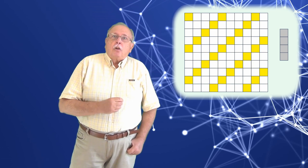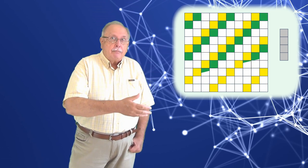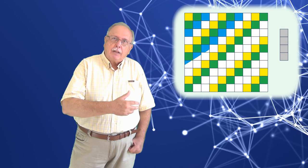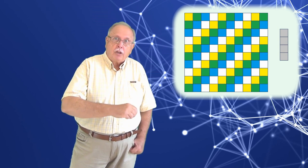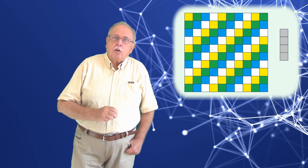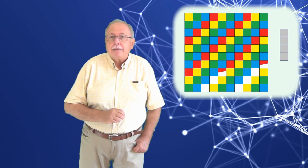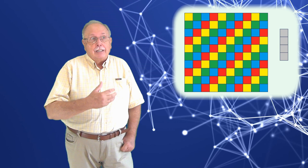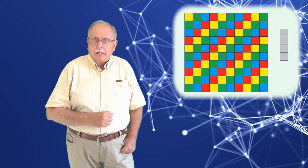Apoi să colorăm cu verde pătratele aflate la dreapta și sub pătratele galbene. Apoi cu albastru pătratele aflate la dreapta și sub cele verzi. Și în fine să colorăm cu roșu pătratele care au rămas și care sunt, așa cum puteți ușor observa, la dreapta și sub pătratele albastre.